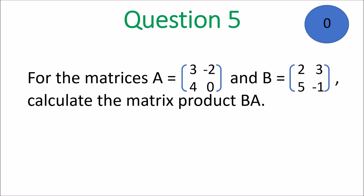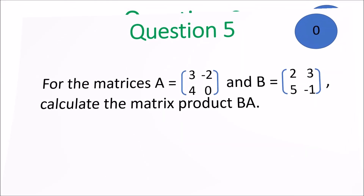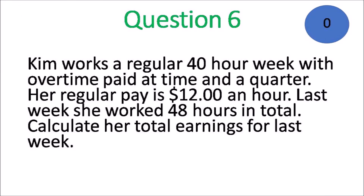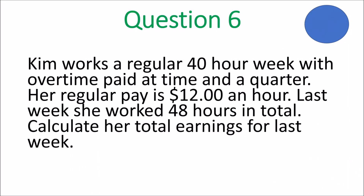And we move on to question 6. Kim works a regular 40-hour week with overtime paid at time and a quarter. Regular pay is $12 an hour. Last week she worked 48 hours in total. Calculate her total earnings for last week.